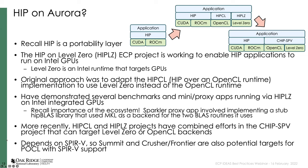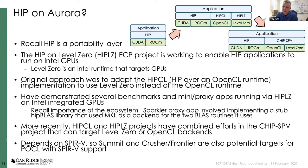On whether Fortran or C++ is the right way to program HPC machines: there are lots of factors involved. The first best-supported option right now does feel like C++. But if you've got a legacy code with a large number of lines of Fortran, you may not care about what compiler vendors are providing as their first choice — you may just be clamoring to have Fortran support.